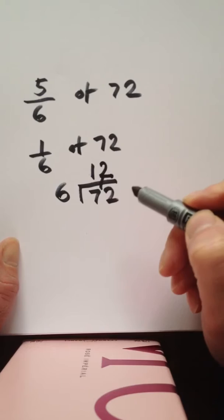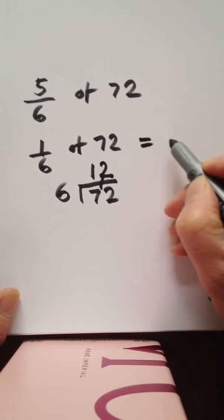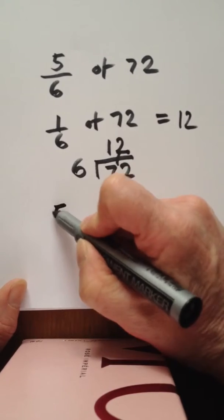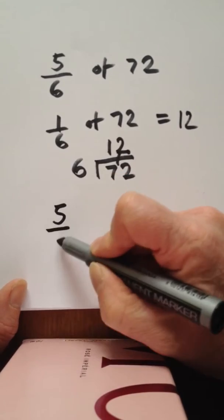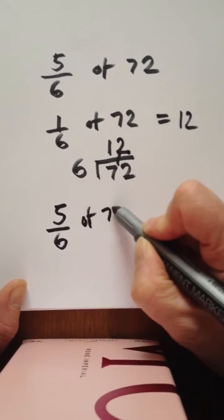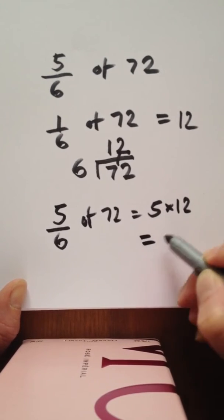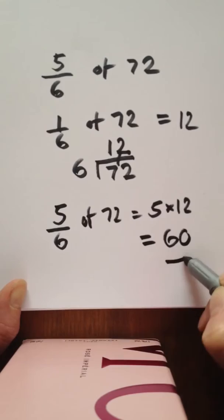So one sixth of 72 is 12. Five sixths of 72 will equal five times 12, so our answer is 60.